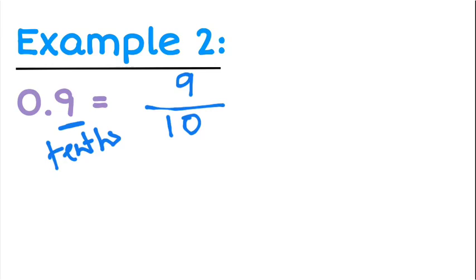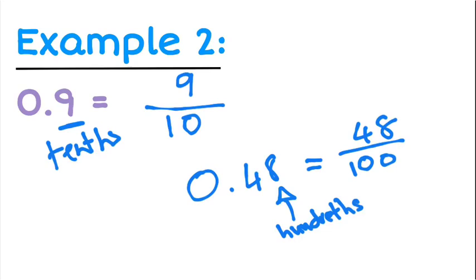If I had a decimal with two decimal places, so 0.48, then that eight is in my hundredths column. So that means I would do this as 48 divided by 100. So you've just got to look at whatever the last digit, which column is that in, and that's what you're dividing by.